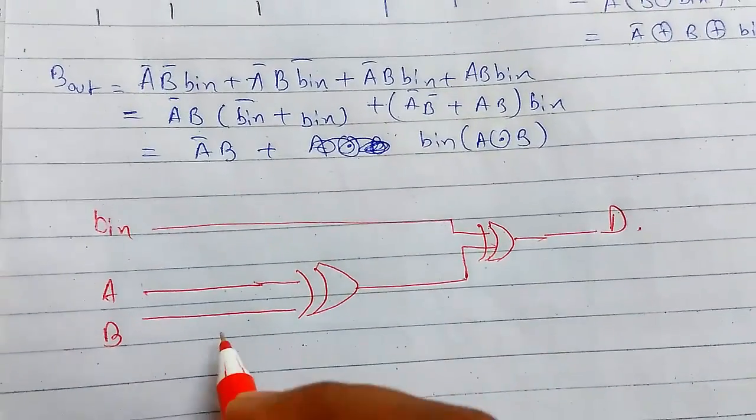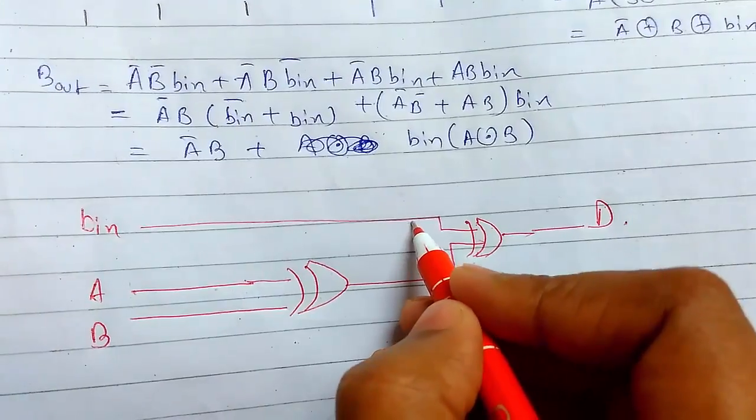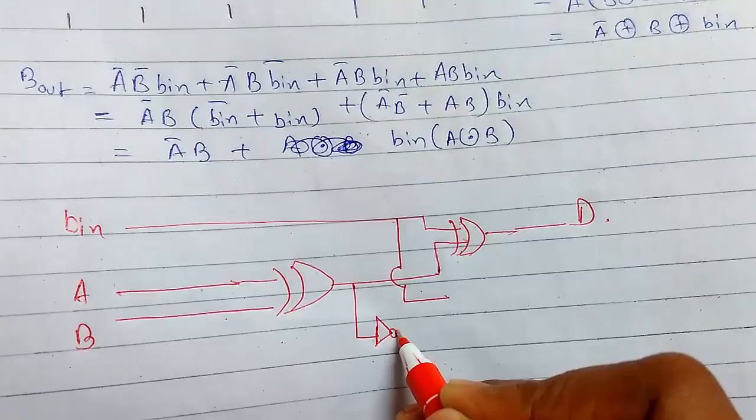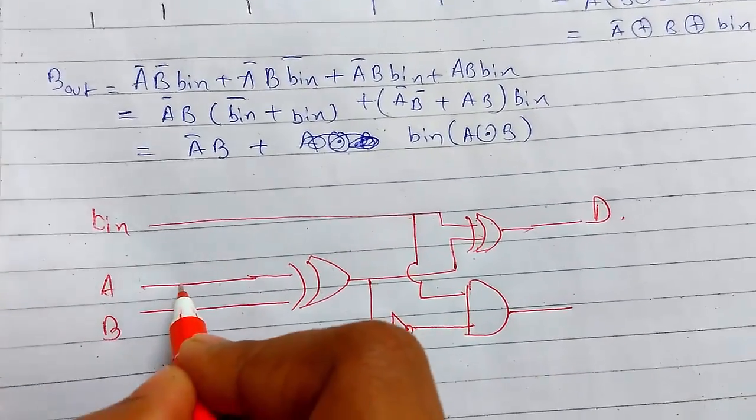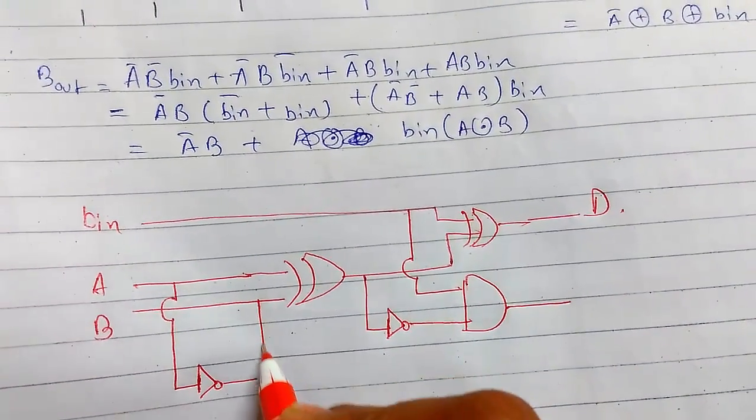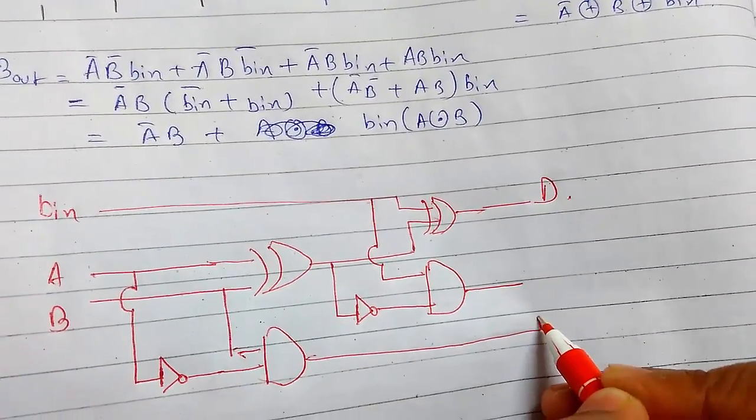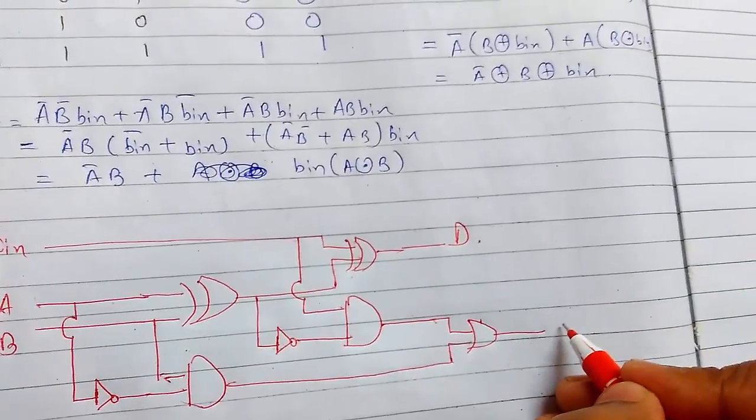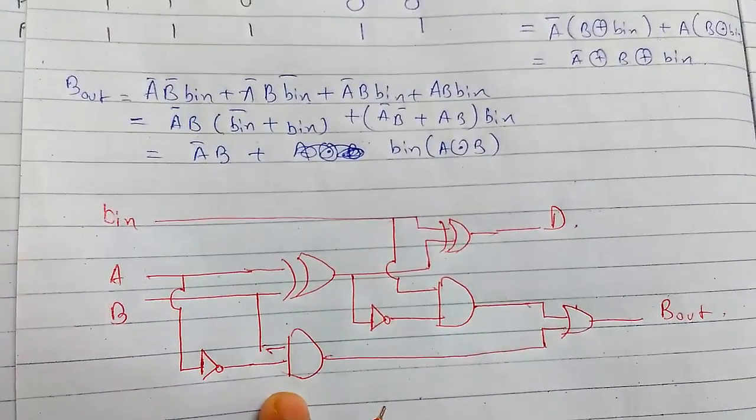Now we need to do this. First, we need to take this from here, pass it through a NOT gate, and then to the AND operation. Now we need to invert this and pass it through an AND gate. The output of these two must be passed through an OR gate. So we will get our borrow out. This is the circuit for this.